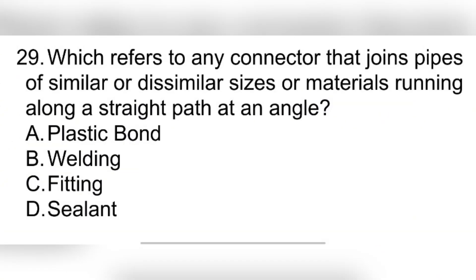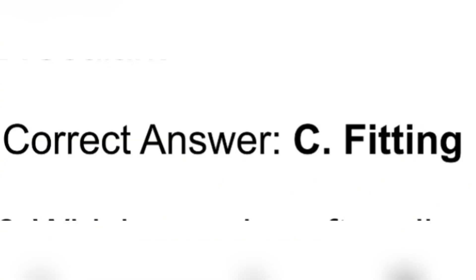Question 29. Which refers to any connector that joins pipes of similar or dissimilar sizes or materials running along a straight path at an angle? A. Plastic bond. B. Welding. C. Fitting. D. Sealant. Correct answer: C. Fitting.